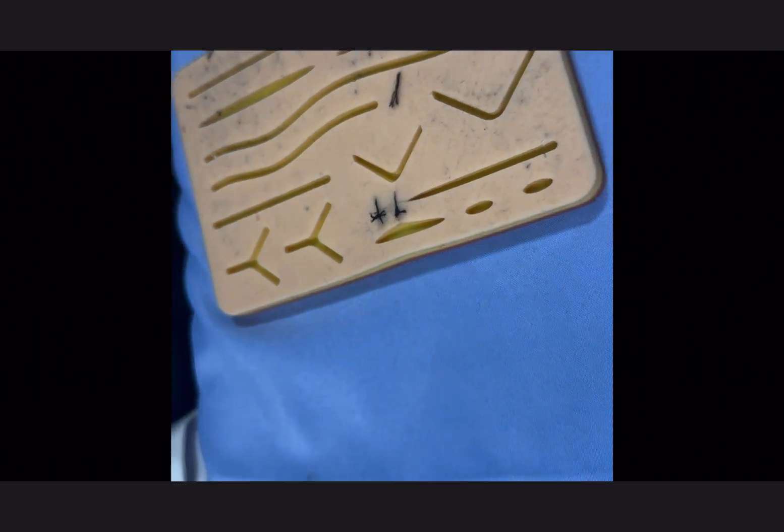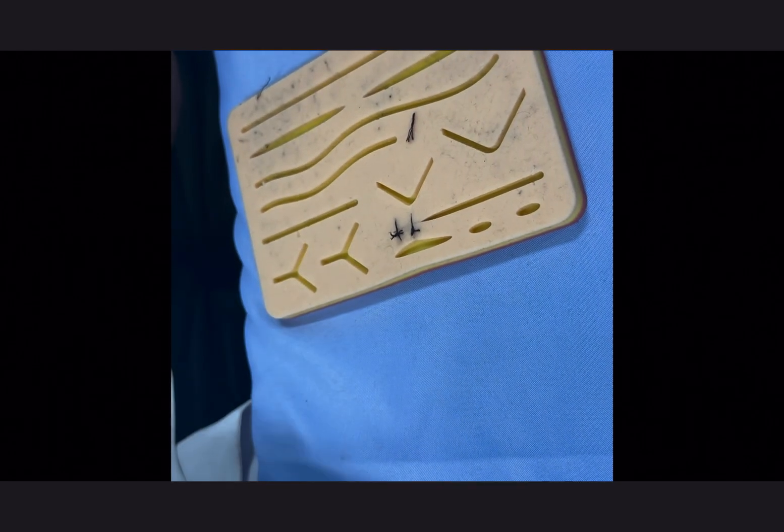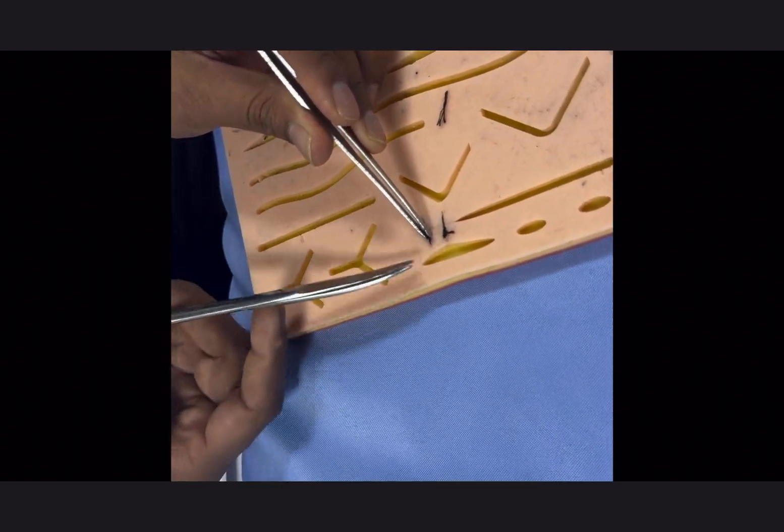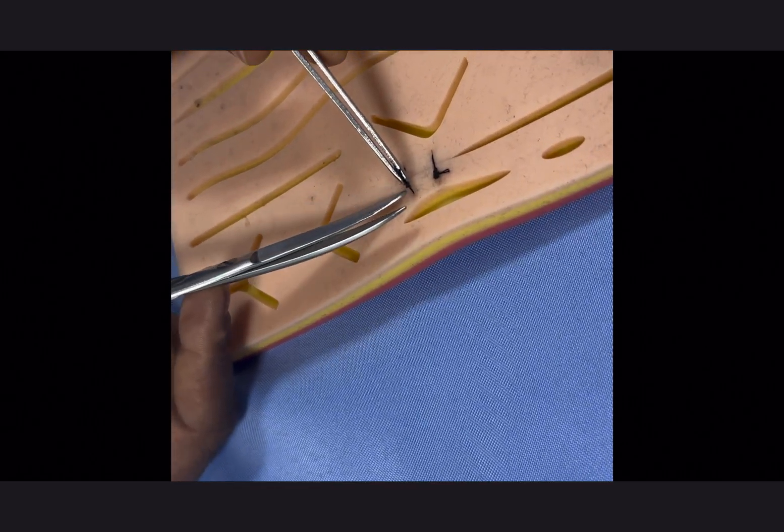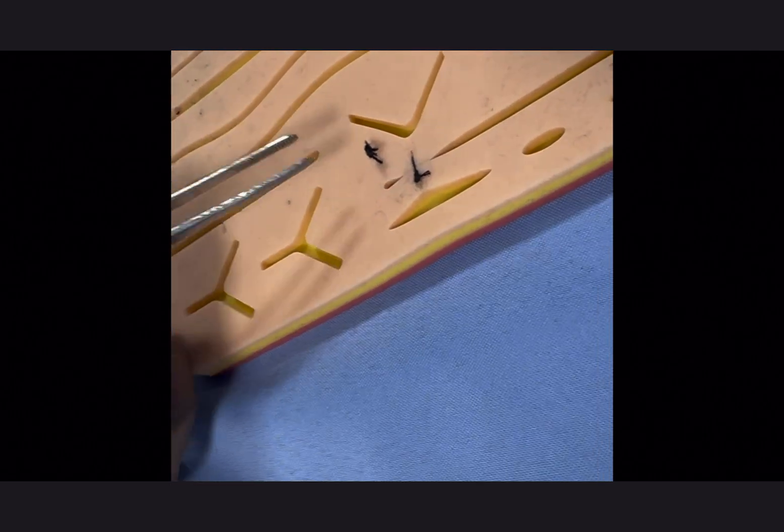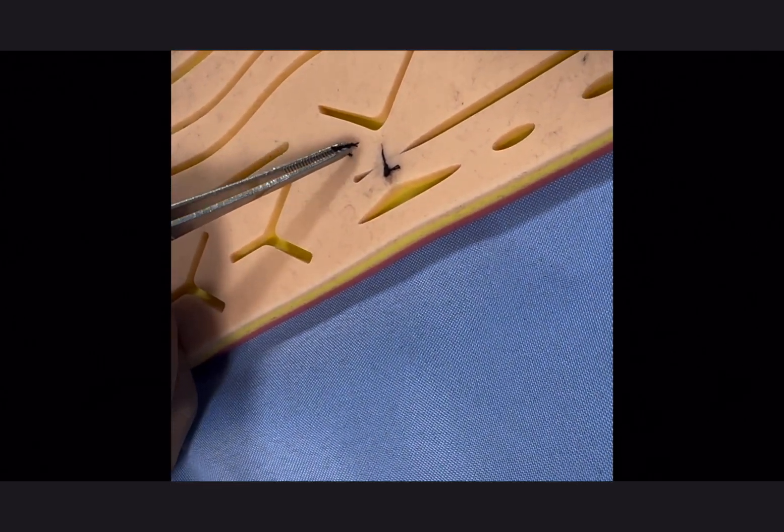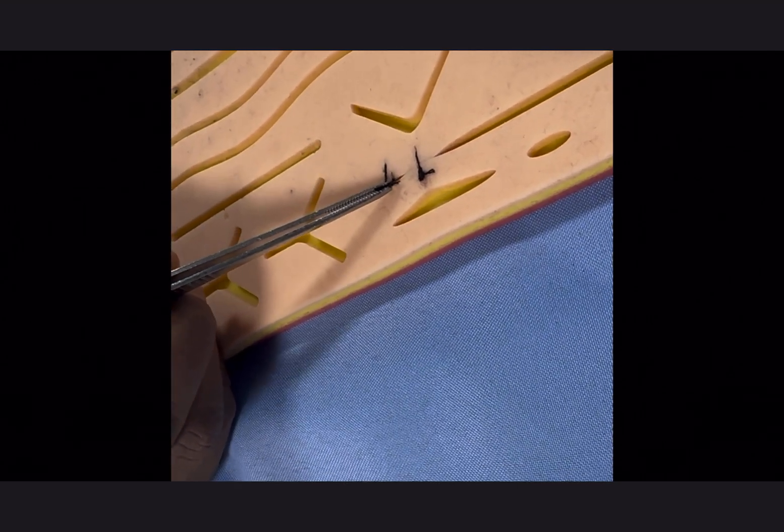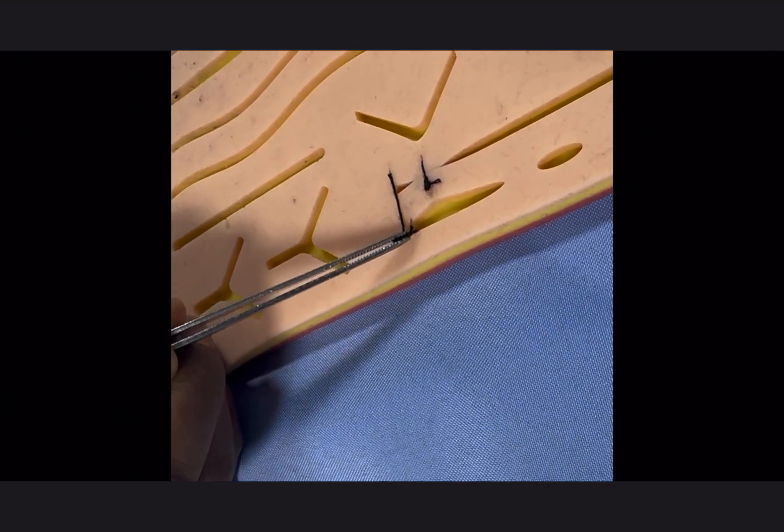Suppose you have done the suturing and then you want to remove it after seven days - then how to do that? Hold the suture, lift it slightly up, and cut in the smaller side here. Now see here - don't pull the thread away, see it's opening. So pull towards the wound such that it will not open.